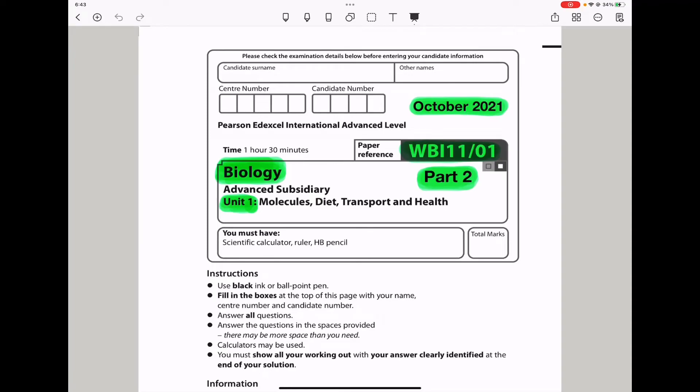Welcome to the Chemistry, Biology, and Math Revision Hub. Today, we are doing the Pearson Edexcel International A-Level Biology Unit 1 for October 2021. This is the Part 2 video. I'll put the link to the Part 1 video below the description box. Let us begin with the first question.